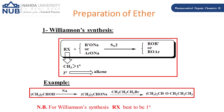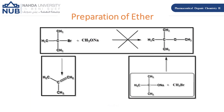It is important that RX be a methyl or primary alkyl halide. Tertiary RX will produce an alkene rather than an ether, because R-ONa or ArONa acts as a strong base and abstracts HX from the tertiary RX. For example, using isopropanol with sodium, the O-Na derivative forms and then reacts with a primary RX such as propyl bromide to give the dialkyl ether. Williamson synthesis requires RX to be primary.